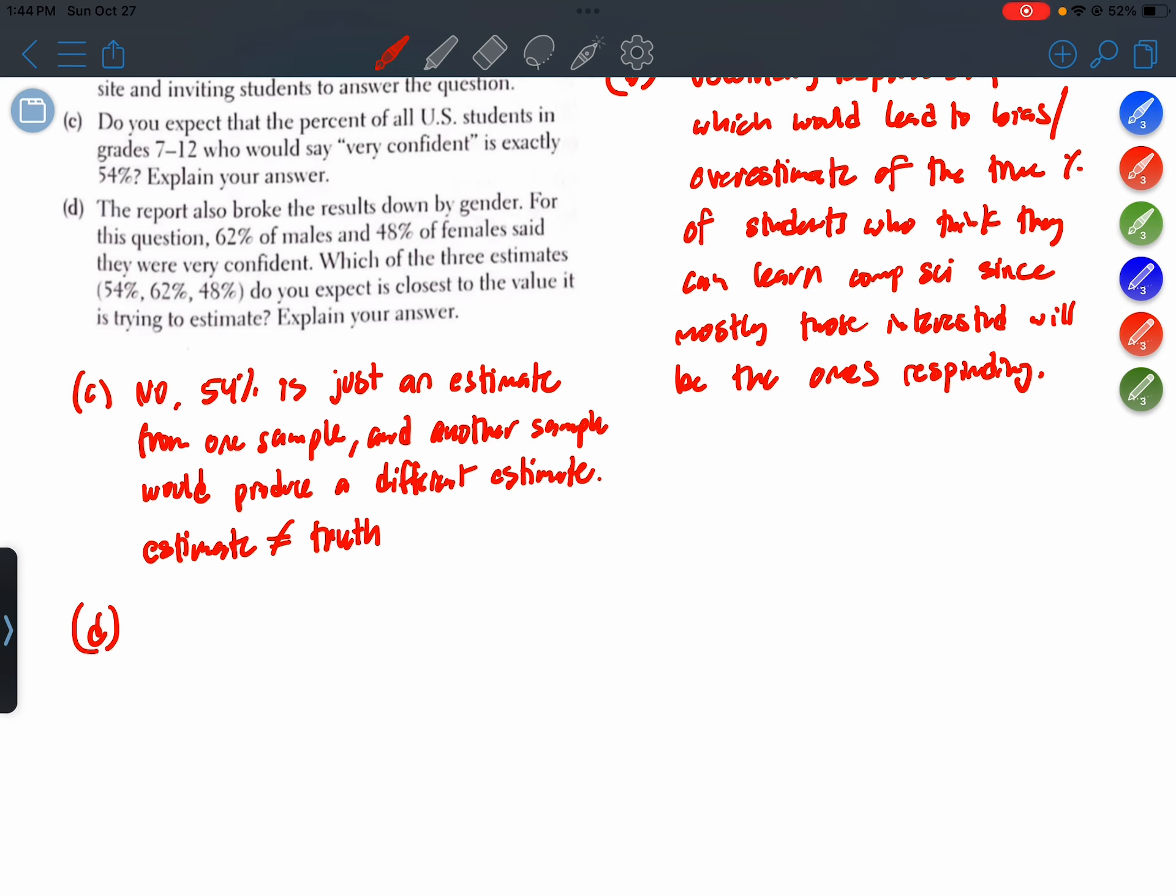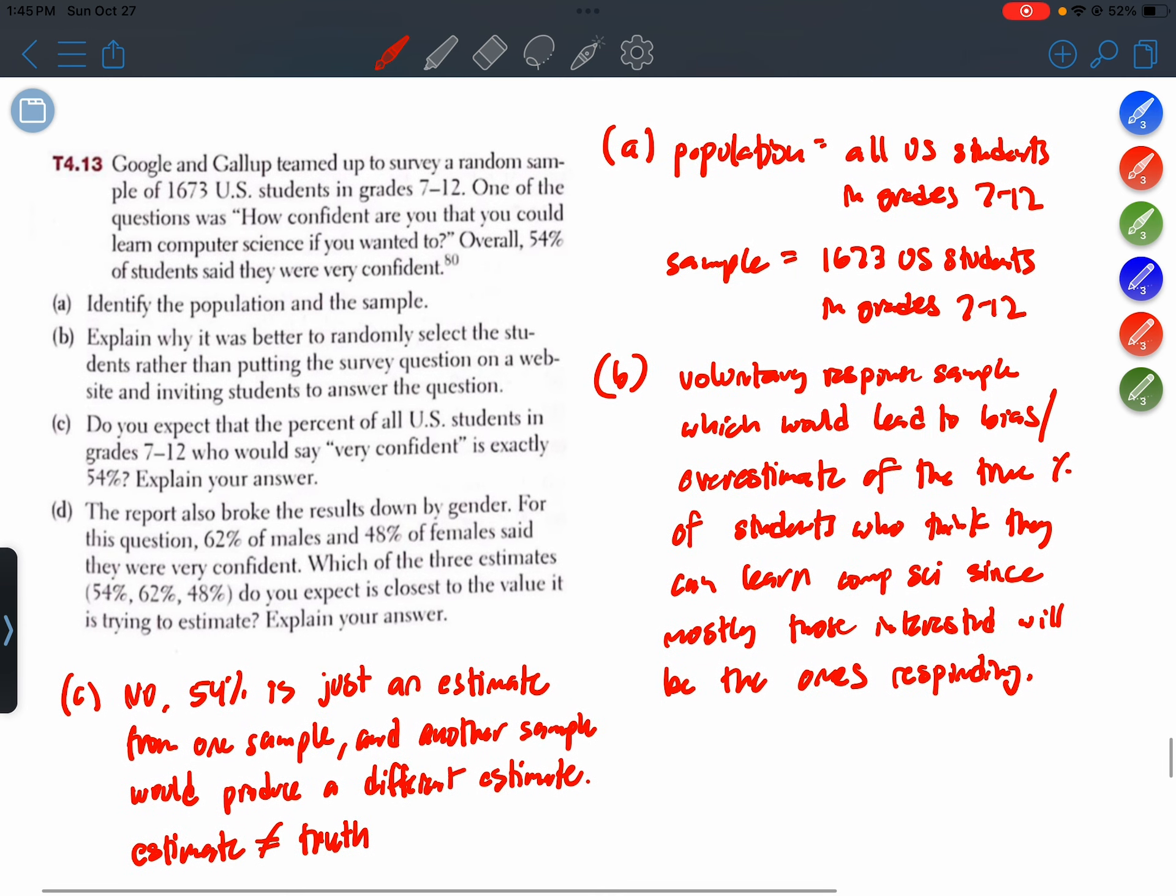The report also broke the results down by gender. For this question, 62 percent of males and 48 percent of females said they were very confident. Which of the three estimates, 54, 62, or 48, do you expect is closest to the value it is trying to estimate? Explain your answer. Well, what we're trying to estimate is the percent of all students, males and females, that would be very confident.